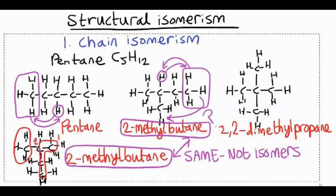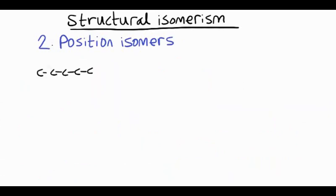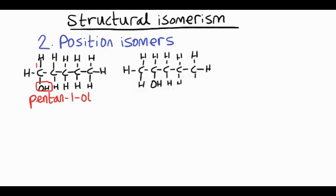Let's have a look at the second type of isomerism, called position isomerism. Position isomerism is where we change the position of a group or atom on the hydrocarbon chain. So again we'll use five carbons in the chain, but this time we'll look at an alcohol — pentan-1-ol, where the alcohol group is on the first carbon. We can move the position of the OH group to the second carbon to make a position isomer, still with five carbons in the chain, and we call that pentan-2-ol.